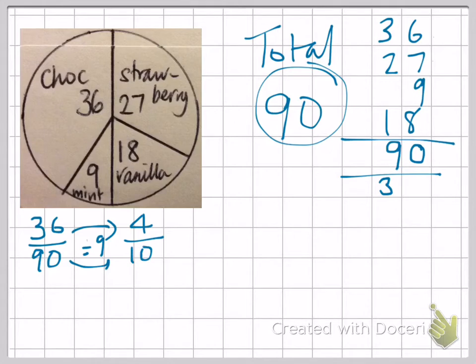So we'll get 4 on the top and we'll get 10 on the bottom. And we can simplify again by dividing by 2 to give us 2 fifths. So that's how you work out what fraction of a circle is taken up, what fraction of a pie chart is taken up by a particular sector.